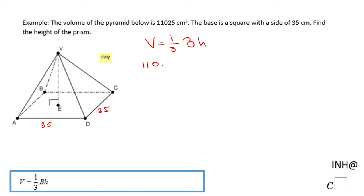That equals 1 over 3. Now the area of the base, the base is a square, is going to be side times side or side squared. So in this case it's going to be 35 squared, which is going to be 1225. So that 1225 is the area of the base.